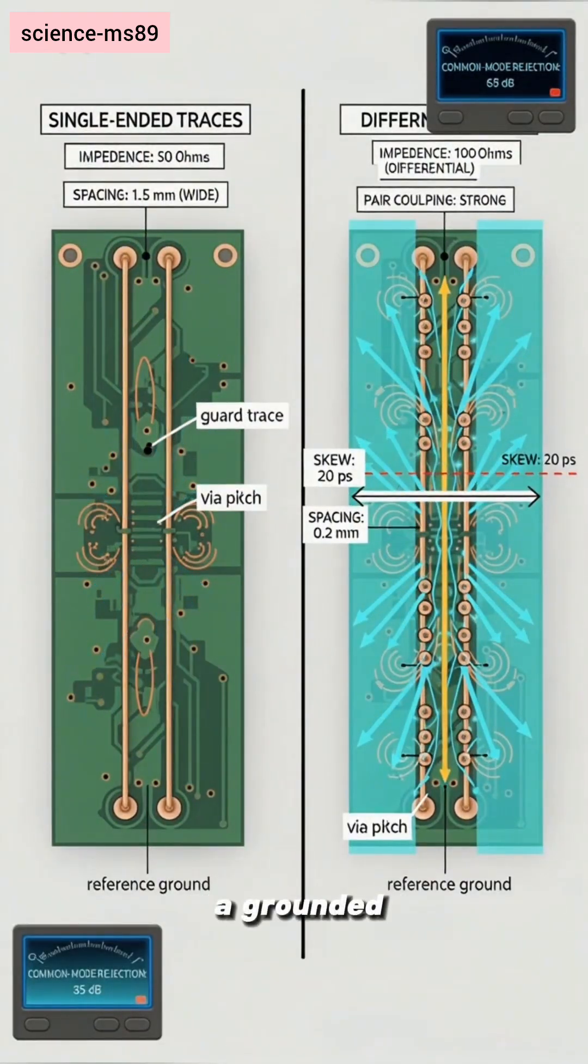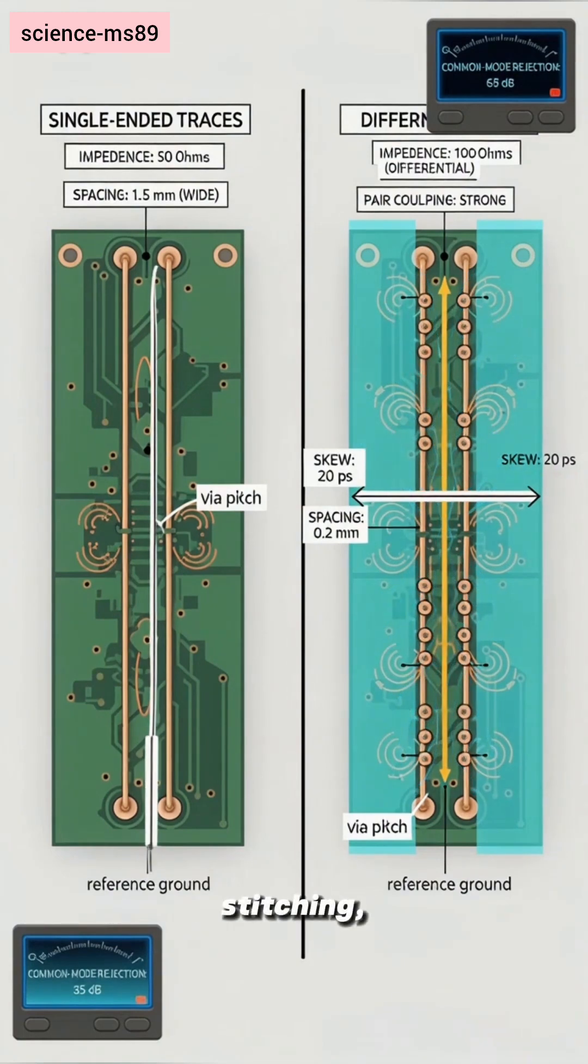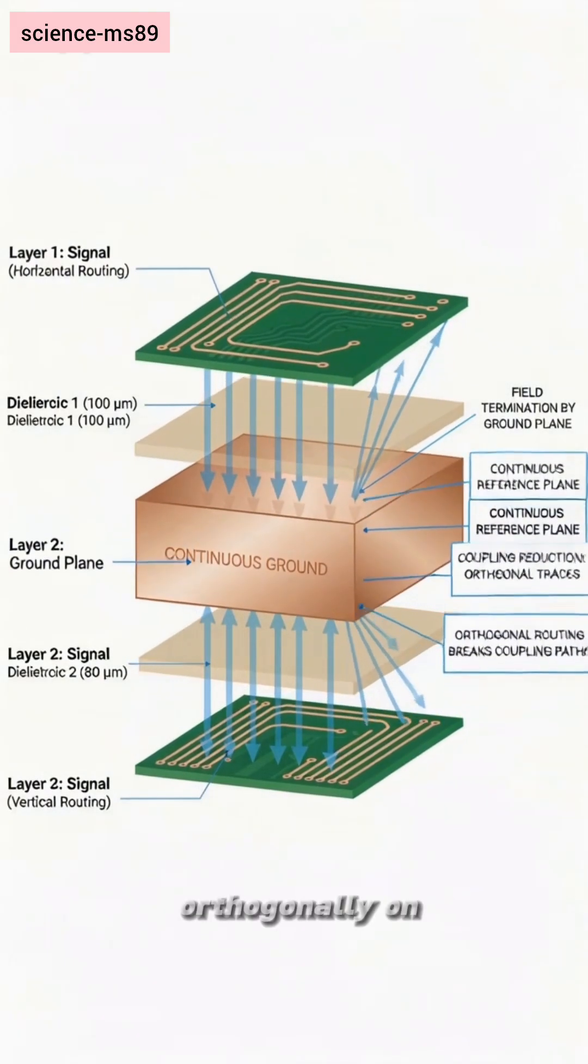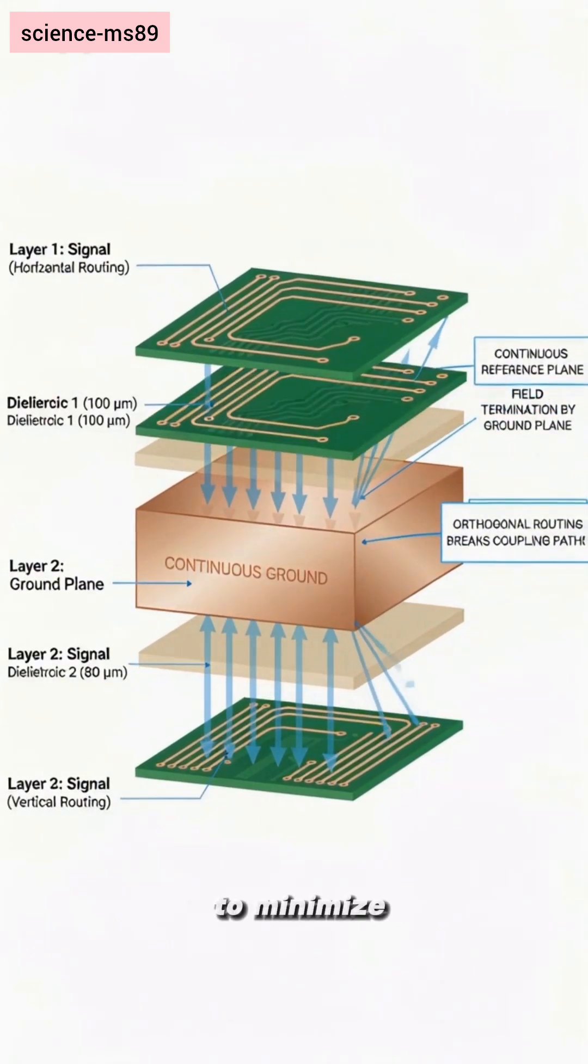Shielding. Add a grounded guard trace with via stitching, keep continuous reference planes, and route orthogonally on adjacent layers to minimize coupling paths.